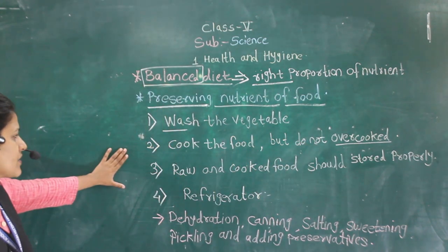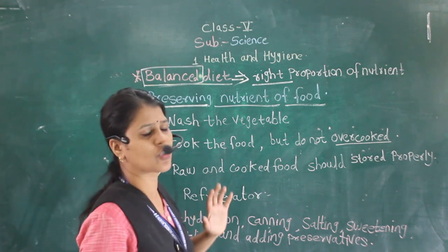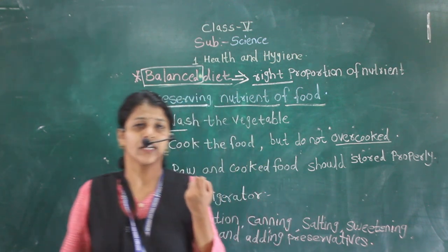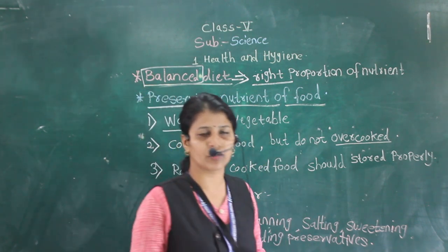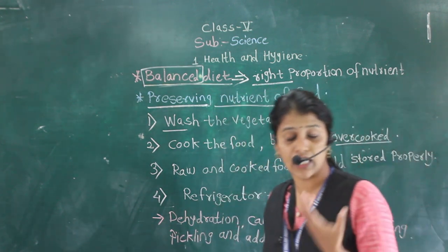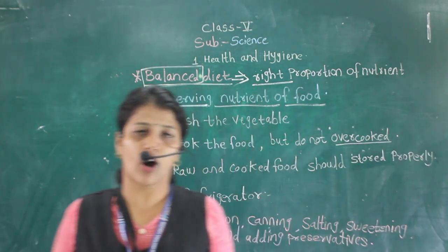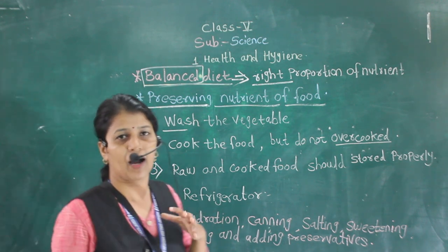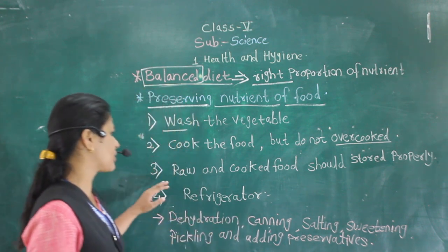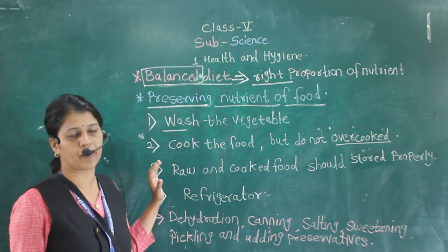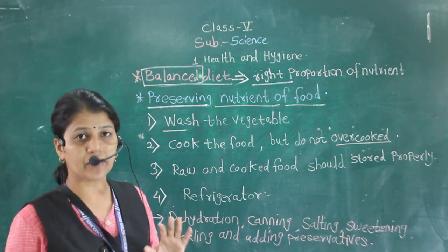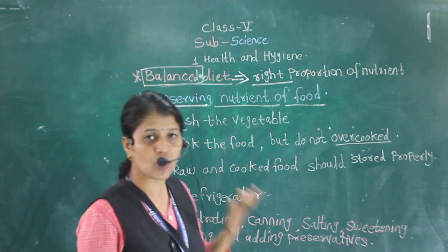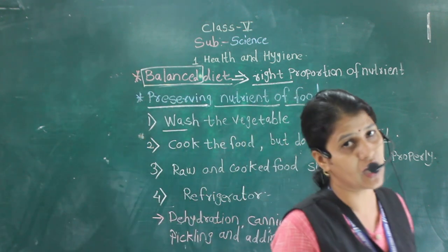The third point is that raw and cooked food should be stored properly. Whatever food is left, you have to keep it in a proper, clean, hygienic place. You can also use a refrigerator to keep it away from germs. Store the food at a clean or hygienic place.